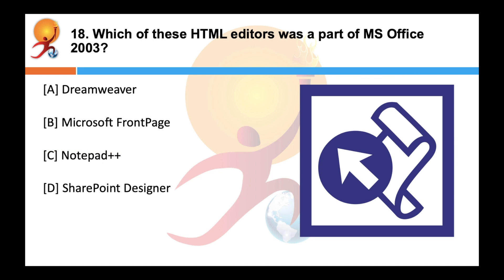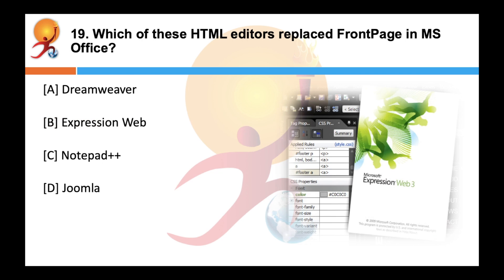Which of these HTML editors was part of MS Office 2003? The correct answer is B — Microsoft Expression Web is an HTML editor and general web design software. It is a component of the discontinued Expression Studio by Microsoft.